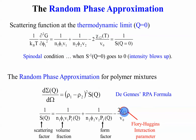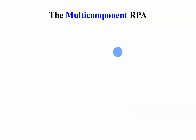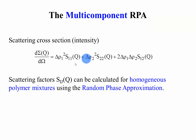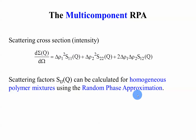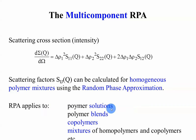The Flory-Huggins interaction parameter can be obtained by fitting SANS data. The multi-component RPA has been extended to include many components. You can calculate the cross-section, obtain phase diagrams, and so on. The scattering factors — S11, S22, S12, and so on for a three-component case — can be calculated for homogeneous polymer mixtures. This applies to polymer solutions, polymer blends, copolymers, and mixtures of homopolymers and copolymers.